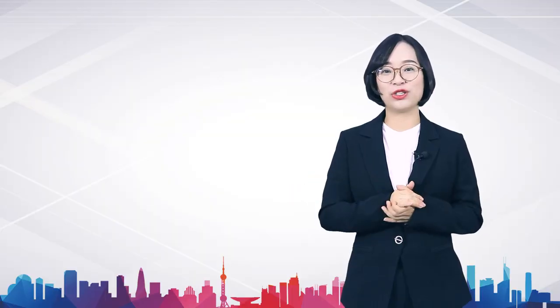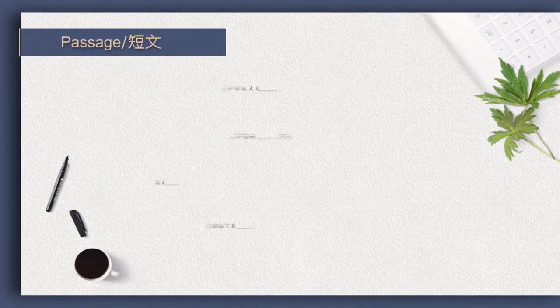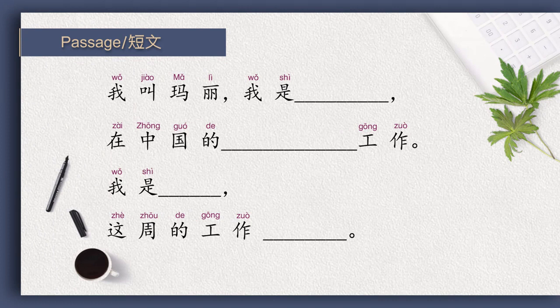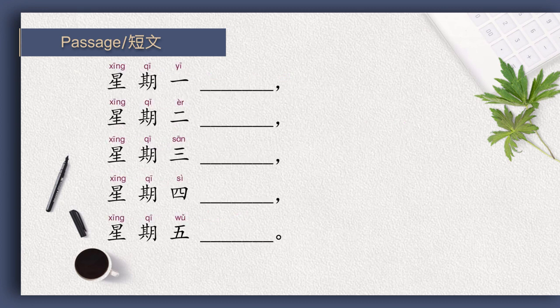Now let's come to the passage of Lesson 7. Please listen to the passage first, and then fill in the blanks. 我叫玛丽，我是美国人，在中国的日本公司工作。 我是秘书。 这周的工作太忙了。 星期一我去银行，星期二我去日本出差，星期三见山口经理，星期四回中国，星期五在公司学习汉语。